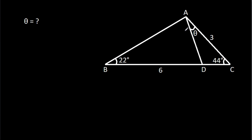In this video, we have been given that AC is 3, BD is 6, angle ABD is 22 degrees, angle ACD is 44 degrees, and angle CAD is theta. We have to find theta.